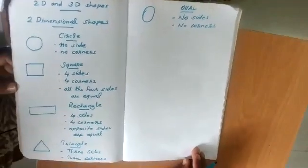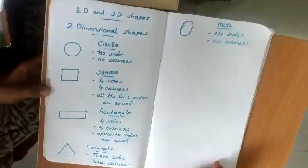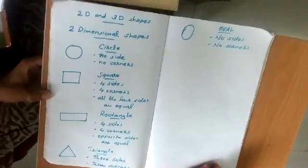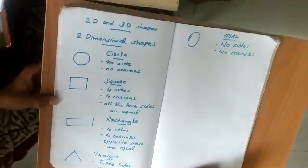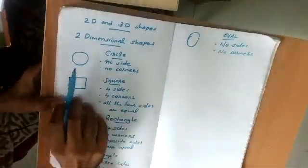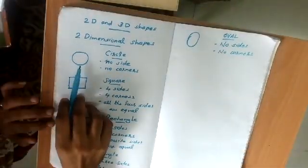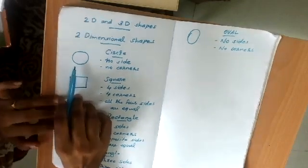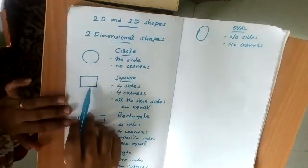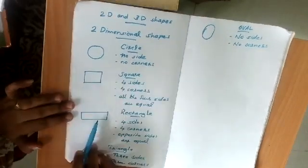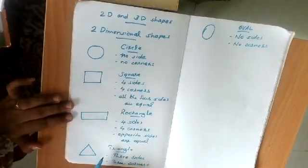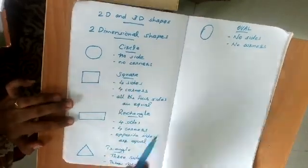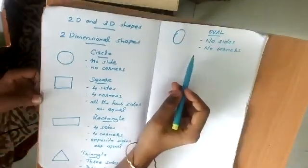So these five are the different types of two-dimensional shapes: circle, square, rectangle, triangle, and oval.